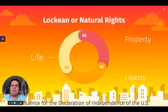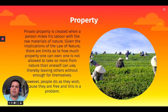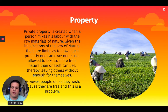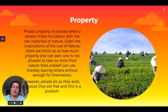Those Lockean rights — life, liberty, and property — influenced the Declaration of Independence of the United States and later other declarations as well. Property is a key concept here because private property is created when a person mixes his labor with the raw materials of nature. If you're going to be planting a seed and taking care of that seed so it grows into a full vegetable, then that's your vegetable. However, under the state of nature, people could take each other's property. What Locke proposes is that we need a system where each other's property is protected not by your own force, but rather by coming together and forming an institution.